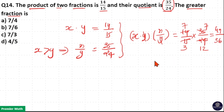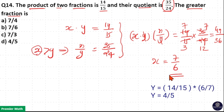So x is equal to 7 by 6. Since x is greater than y, the greater fraction is 7 by 6. So option D is your answer.